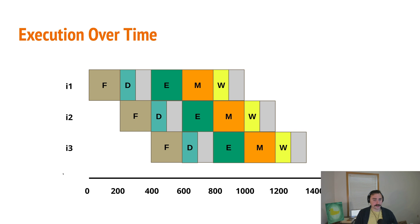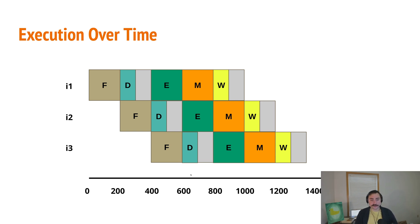To understand the benefits of pipelining a bit more, let's look at the new execution timeline — same format, I1, I2, and I3 on the y-axis and clock period in picoseconds on the x-axis. In the first clock period, we start fetch for I1. In the second, we start decode for I1 while I2 begins fetch. By the third clock period, I1 begins execution, I2 begins decode, and I3 begins fetch. We're overlapping the execution of multiple instructions — every single cycle we're doing a fetch, a decode, an execute, a memory, and a write-back. We're fully utilizing all of these different components inside our pipeline.